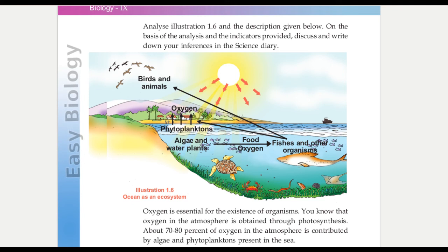Third indicator, how photosynthesis in the oceans affect other organisms. The aquatic organisms get oxygen and food by the process called photosynthesis that takes place in the ocean. The major portion of oxygen is obtained from algae and other water plants by the process called photosynthesis that takes place in the ocean. About 70 to 80% of oxygen in the atmosphere is contributed by algae and phytoplanktons present in the sea.